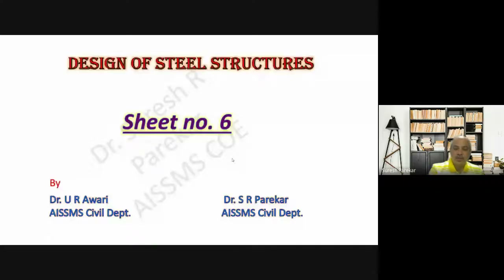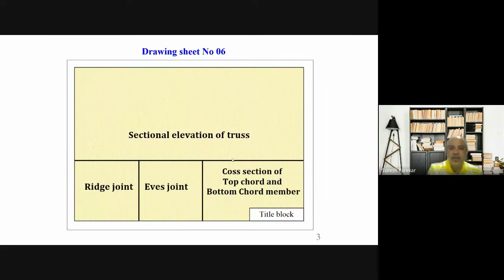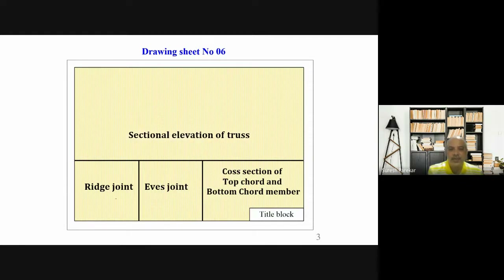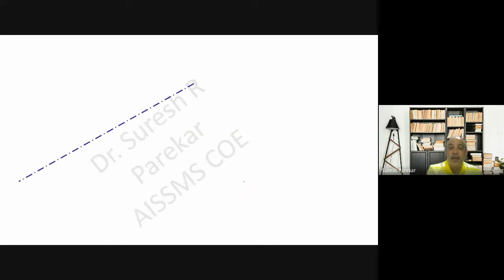Good evening. Today we are on Sheet Number Six, where we have the graphical method for dead load and wind load. In this sheet we are going to plot the sectional elevation of the truss, show each joint — including the bottommost joint — and show the cross-section of the top chord and bottom chord members. You have to divide your sheet into two parts: one part has the sectional elevation with two joints, and the other has the cross-sections.